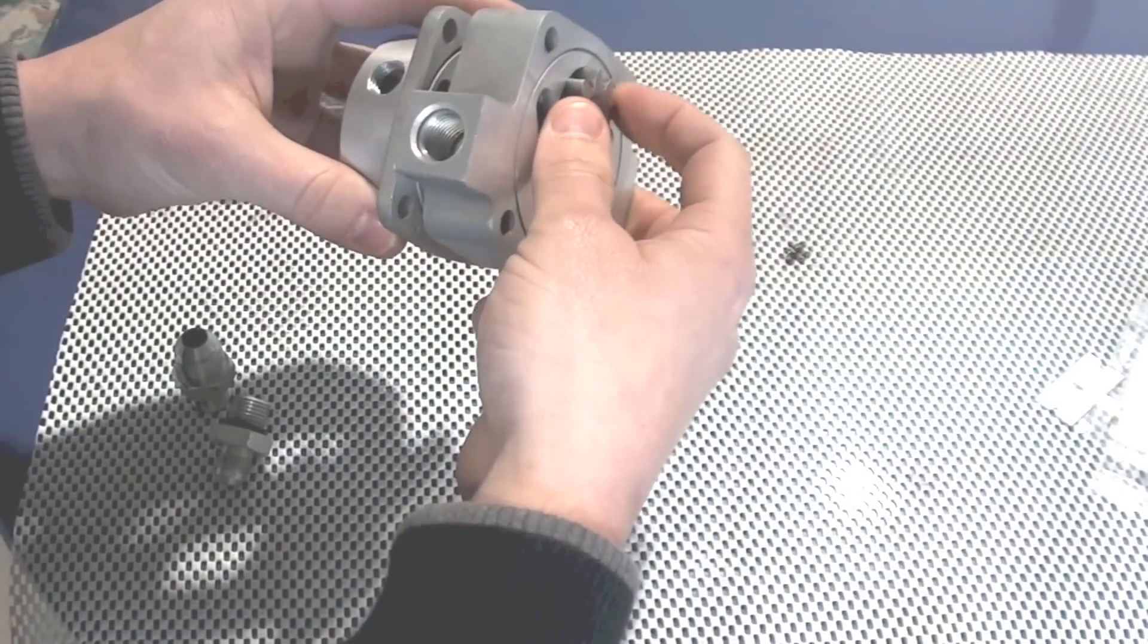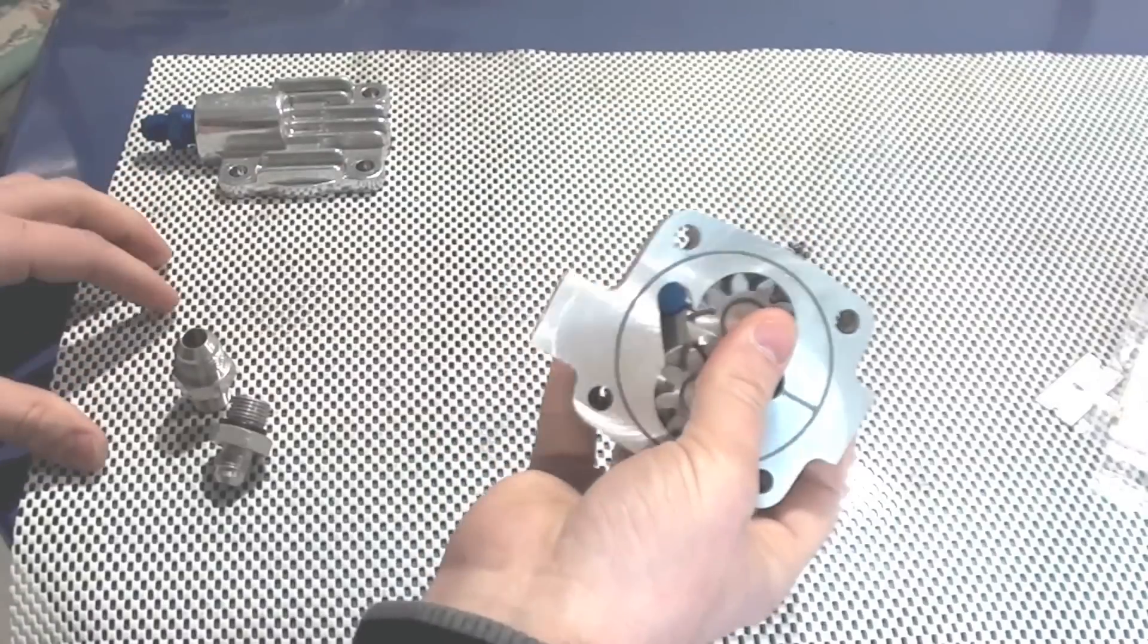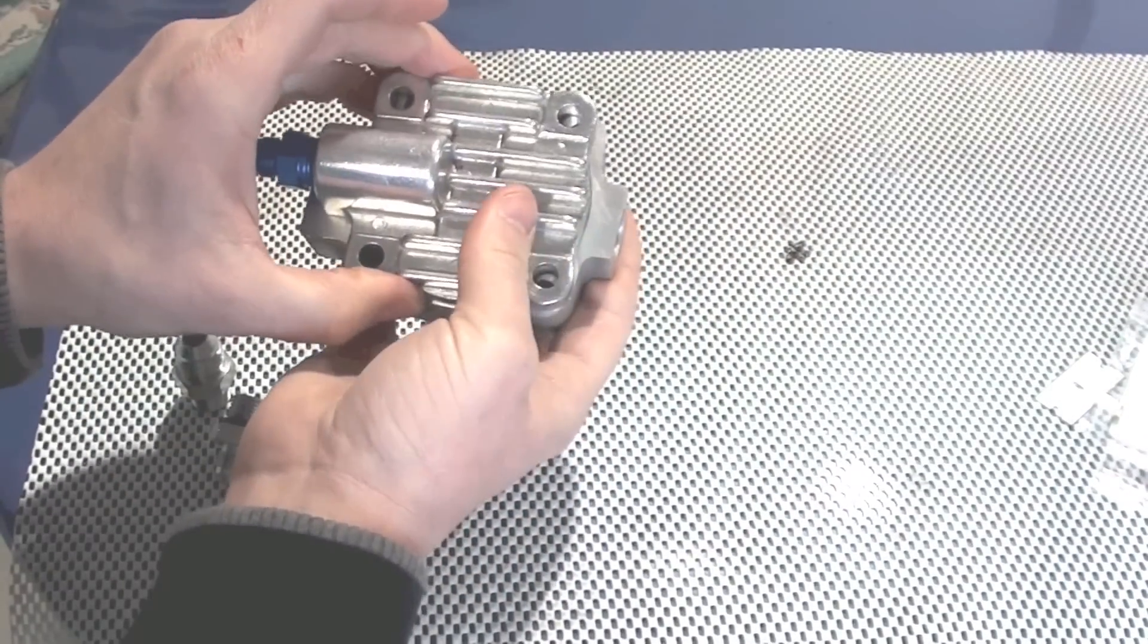So I'll align the shafts, get the keyways lined up. You can see the pump goes together really easy. Then the full flow cover goes on the top.